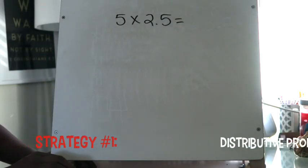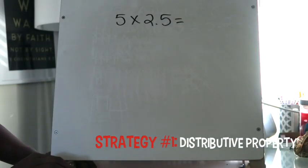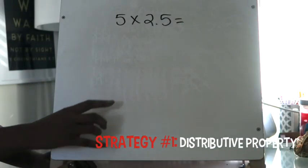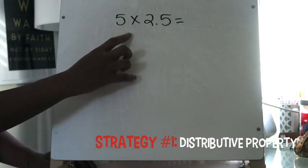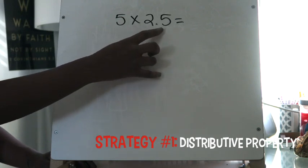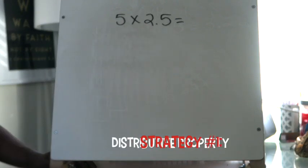Today we are going to be multiplying a decimal by a whole number. We're going to multiply 5 times 2 and 5 tenths. We're going to be looking at two strategies: the distributive property and partial products.